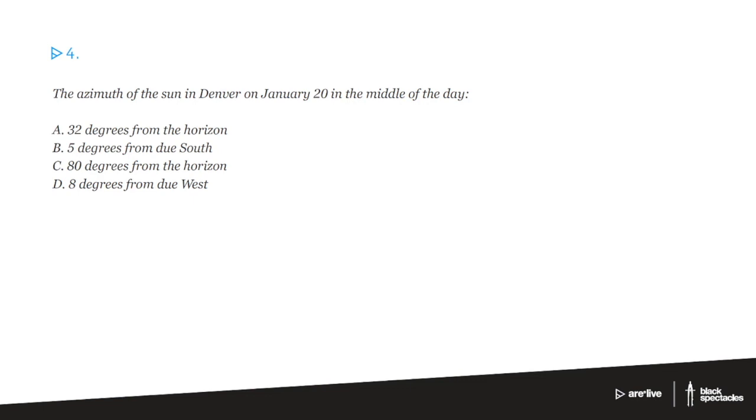So azimuth, when I'm thinking about where the Sun is in the sky, there are two key things I need to understand. So this is going to be a little tricky to draw, so give me a second. If that's my building, and that's north, and I'm somewhere in the United States, say Denver.